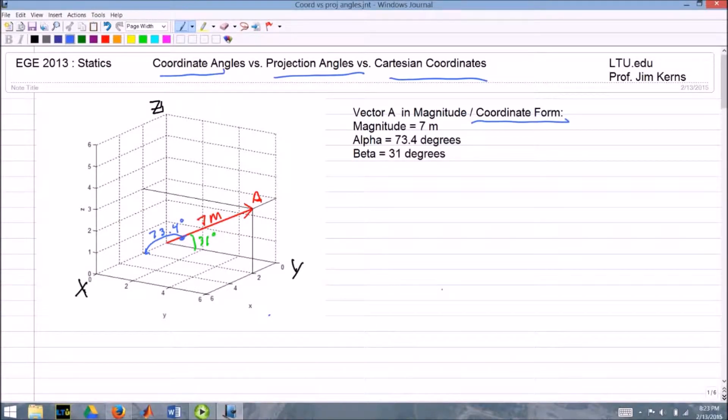We'll take that vector, convert it to Cartesian coordinates, and then convert it into a form using projection angles. Once we have that, we'll work the process in the other direction to get back to the coordinate angles. That way we get a feel for how the process works going both ways. So get out your pencil and paper, follow along, pause the video where you need to, and away we go.